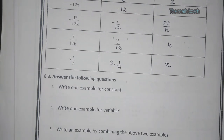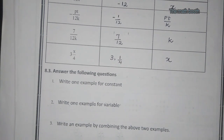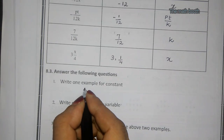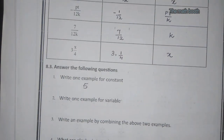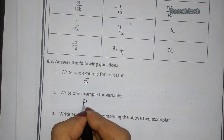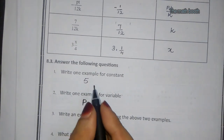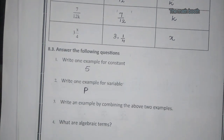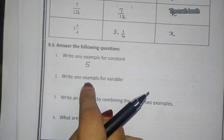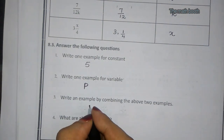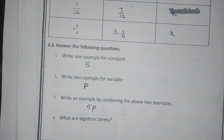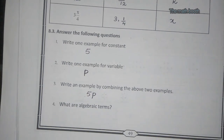Now answering the questions: write one example for a constant — I'll take 5. Write one example for a variable — I'll take p. Write an example combining the above two, which is nothing but an algebraic term. Combining 5 and p gives the algebraic term 5p.